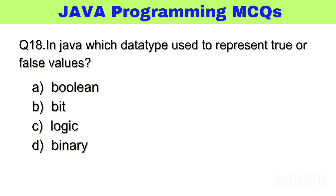Question number 18. In Java, which data type is used to represent true or false values? The right answer, option A: boolean.